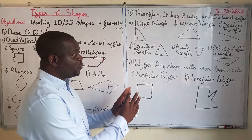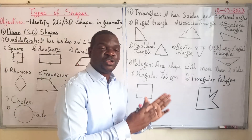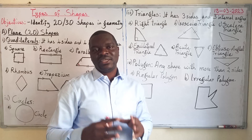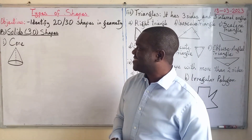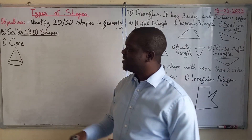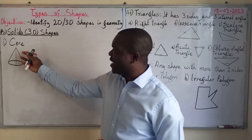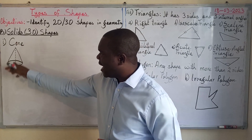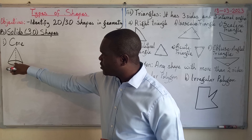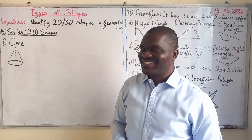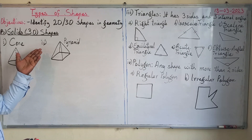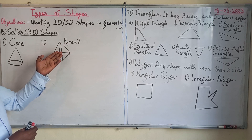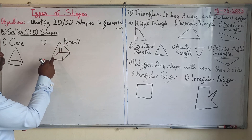Now let's look at solid or three-dimensional shapes. The first solid shape is a cone — it has a rounded base, a height, and of course the radius of the base.